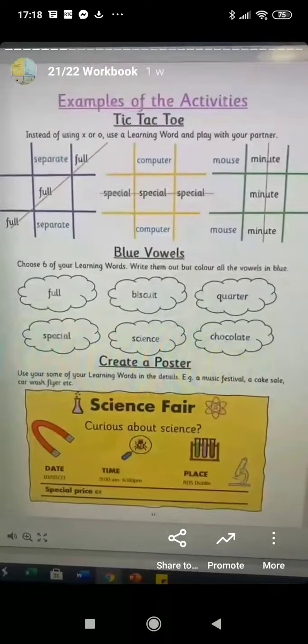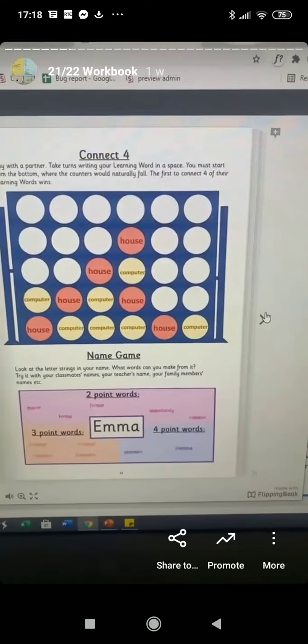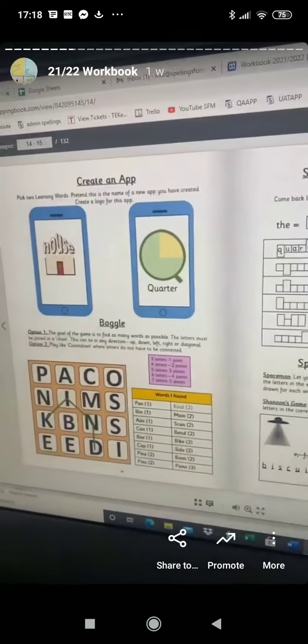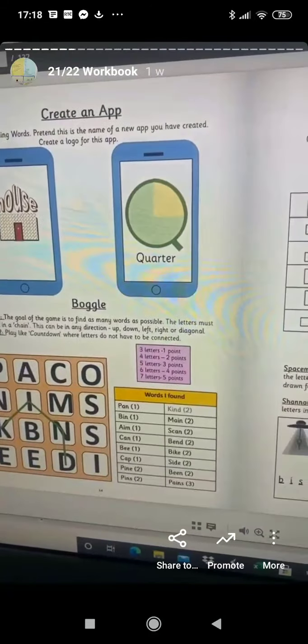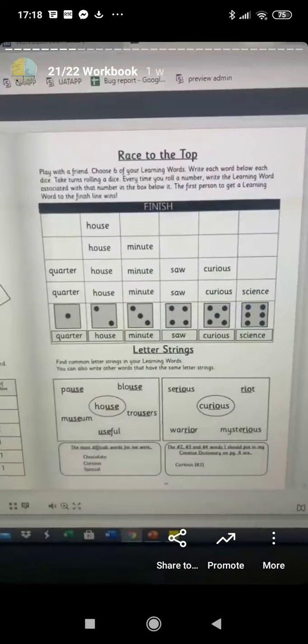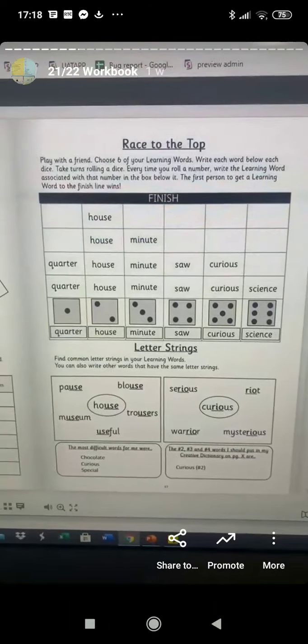So you can see there, sorry, create a poster is new, connect four is new, the name game is new, create an app is new, we have boggle there, that's new and race to the top is in there as well, which are our new ones.